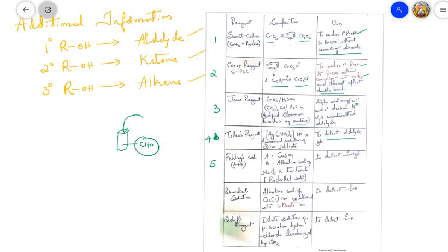Fifth: Fehling's solution — a mixture of Fehling's solution A (copper sulfate) and Fehling's solution B (alkaline solution of sodium or potassium tartrate, also called Rochelle's salt). It is used to detect an aldehyde group. Sixth: Benedict's solution — an alkaline solution of Cu²⁺ complexed with citrate ion — also used to detect aldehydes. Seventh: Schiff's reagent — a dilute solution of para-rosaniline hydrochloride decolorized by SO₂ — also used to detect aldehydes. So four reagents detect aldehydes: Tollens', Fehling's, Benedict's, and Schiff's.